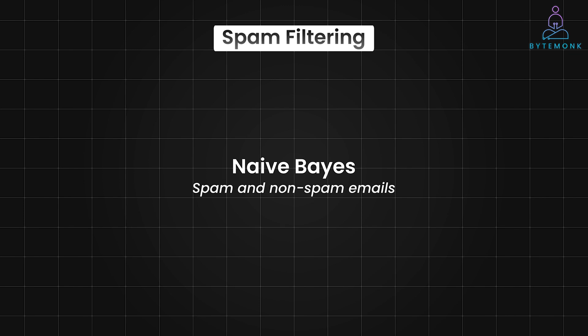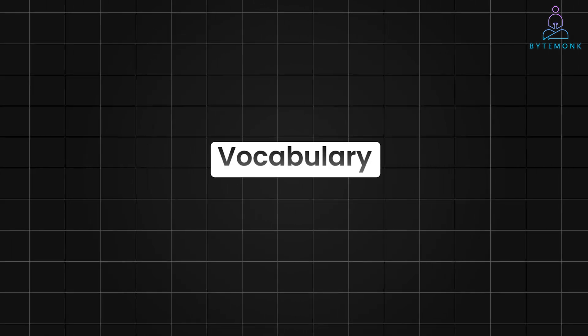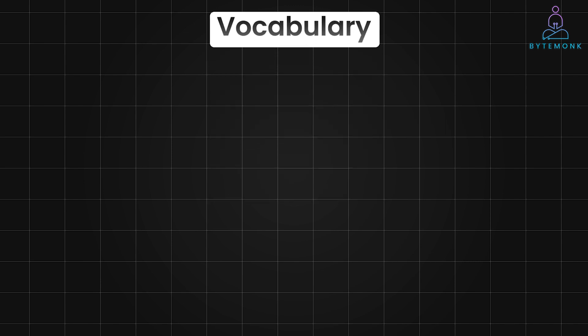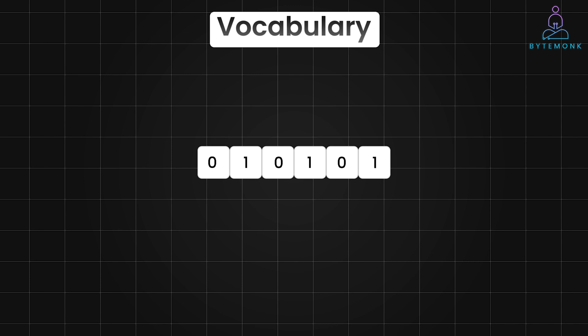Before we dive into the probability calculations, let's discuss an important concept: vocabulary. In Naive Bayes, a vocabulary is a list of all the unique words the model considers — think of it as the model's dictionary. Each email is then represented as a vector of numbers, where each element corresponds to a word in the vocabulary. The value can be binary, say 1 for present and 0 for absent, or represent the frequency of the word in the email.